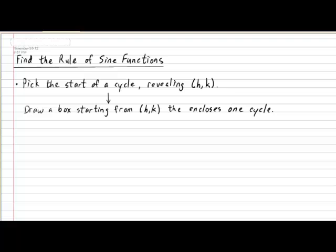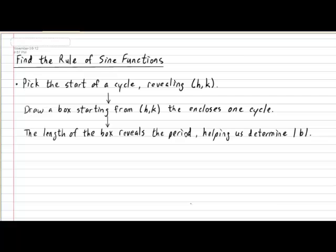Once the box is properly drawn the next step involves simply determining the length of the box which will reveal the length of the cycle or the period and that in turn will help us determine the value of the absolute value of b.